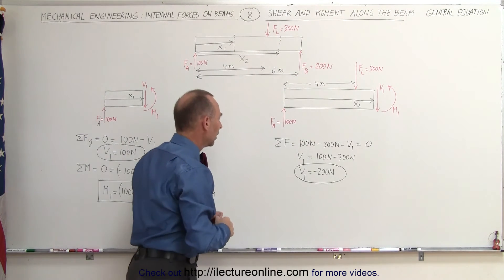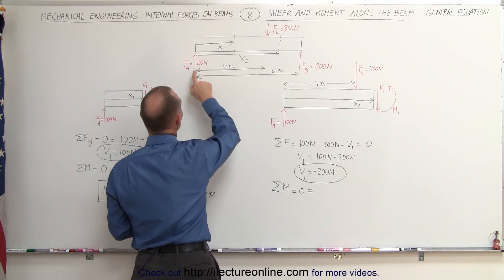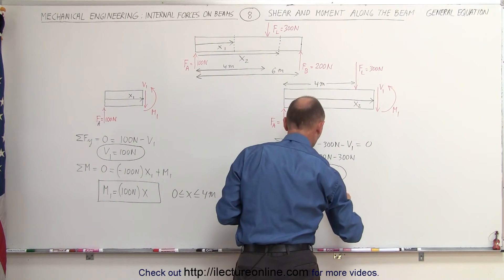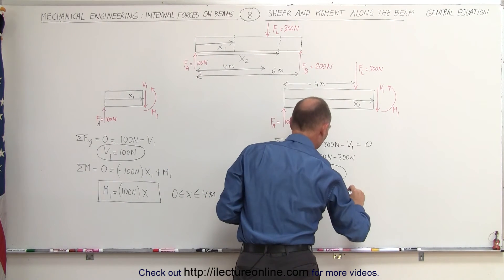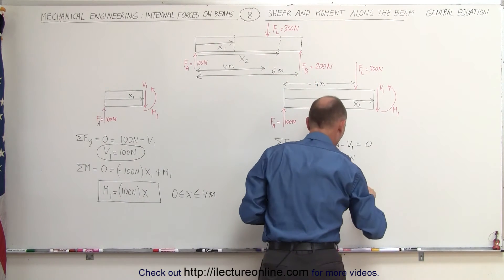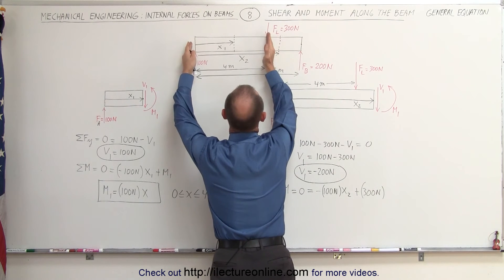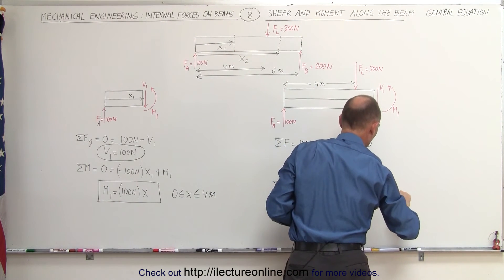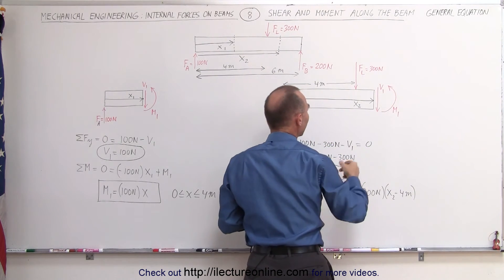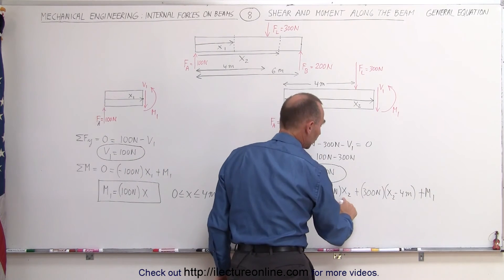To find the moment on the right section, the sum of moments equals zero. There are two forces contributing: the 100-newton force causes a clockwise (negative) moment of minus 100 newtons times x2, and the 300-newton load force causes a counterclockwise (positive) moment of plus 300 newtons times (x2 minus 4 meters) — that distance being x2 minus 4 meters. Then there is the internal moment M1, which is also a counterclockwise positive moment.